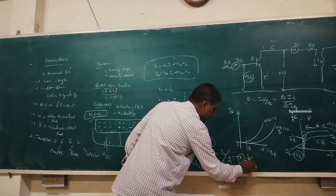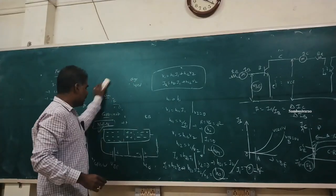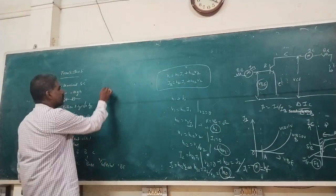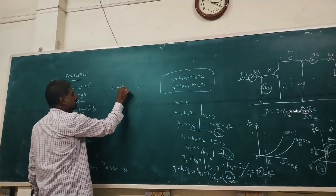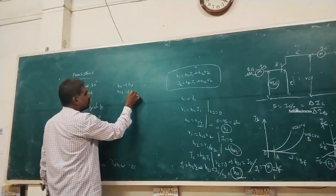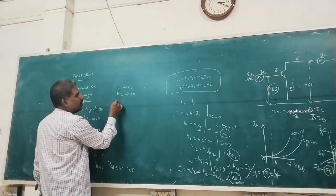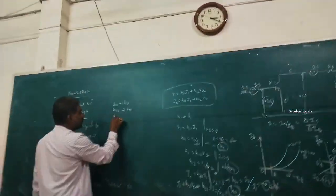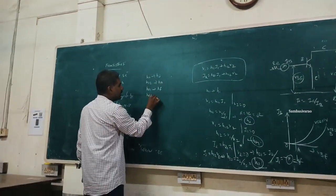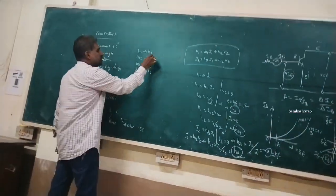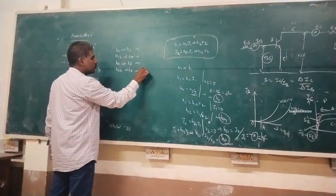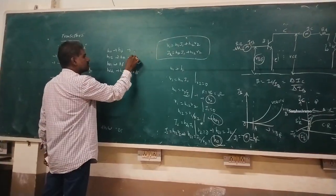By substituting the four parameters, the hybrid equivalent circuit is drawn: H11 = HI (input impedance), H12 = HR (reverse voltage), H21 = HF (forward current gain), and H22 = HO (output admittance).